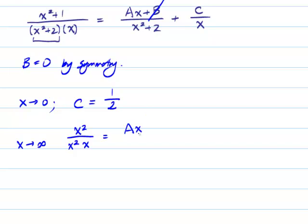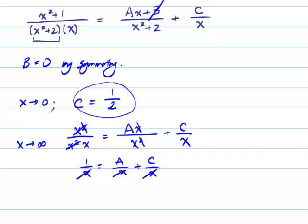And now we do some cancelling, and we find out that indeed, this is just 1 over x is equal to a over x plus c over x. And so the x's cancel out, and we find that a plus c is equal to 1. Well, we know that c is a half, so a must also equal to 1 half.